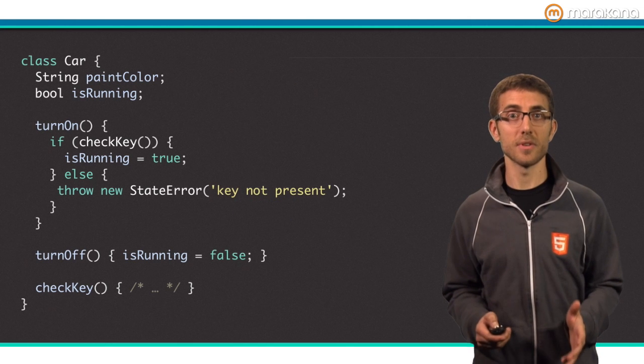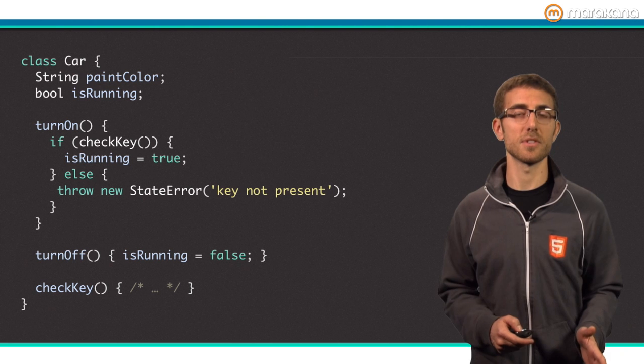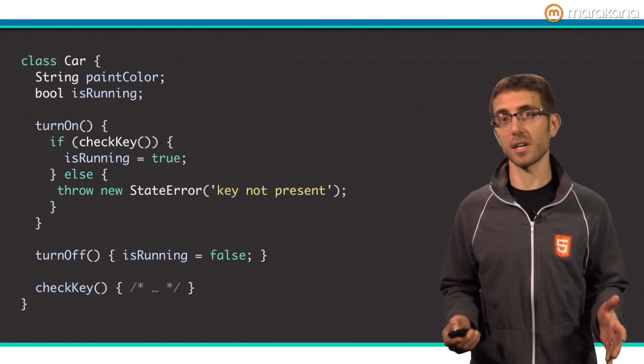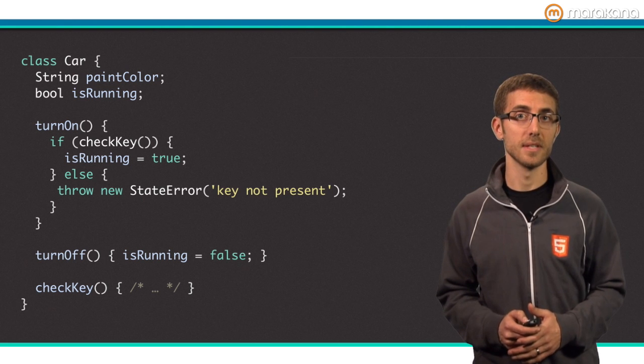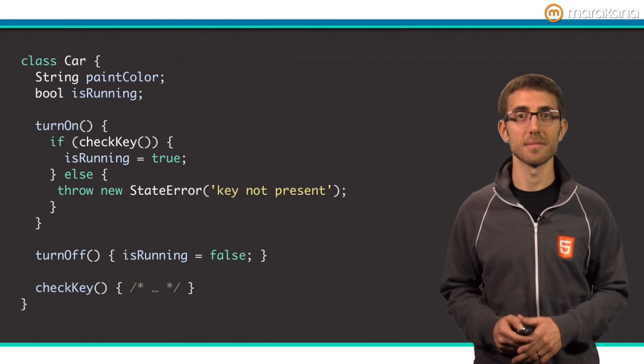The Dart SDK ships with classes for everything, from strings and numbers to dates and durations, to abstract concepts like type and object. But of course, you can make your own classes. Here's an example.